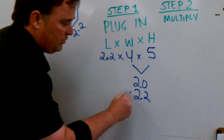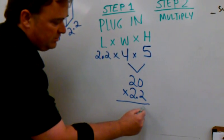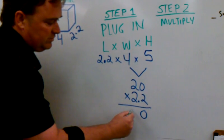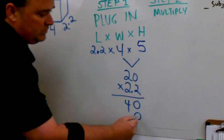Zero. Zero. Four. And zero. Two times zero is? Zero. And two times two is? Four.